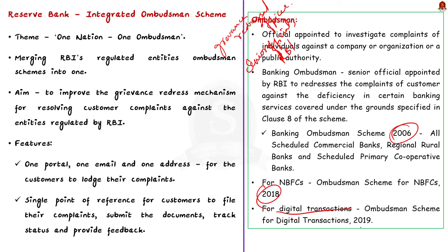Now, with the new Reserve Bank Integrated Ombudsman Scheme (RBIOS), RBI is adopting a 'one nation, one ombudsman' approach by merging its three ombudsman schemes into one. Currently, all customers of RBI-regulated entities — banks, NBFCs — will have a single grievance redressal system. Through this, RBI aims to further improve the grievance addressal mechanism for resolving consumer complaints against entities regulated by it.